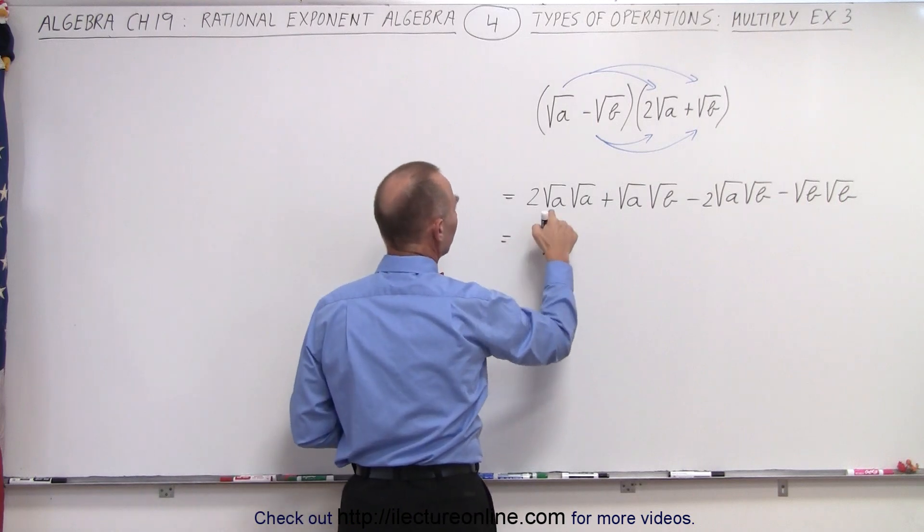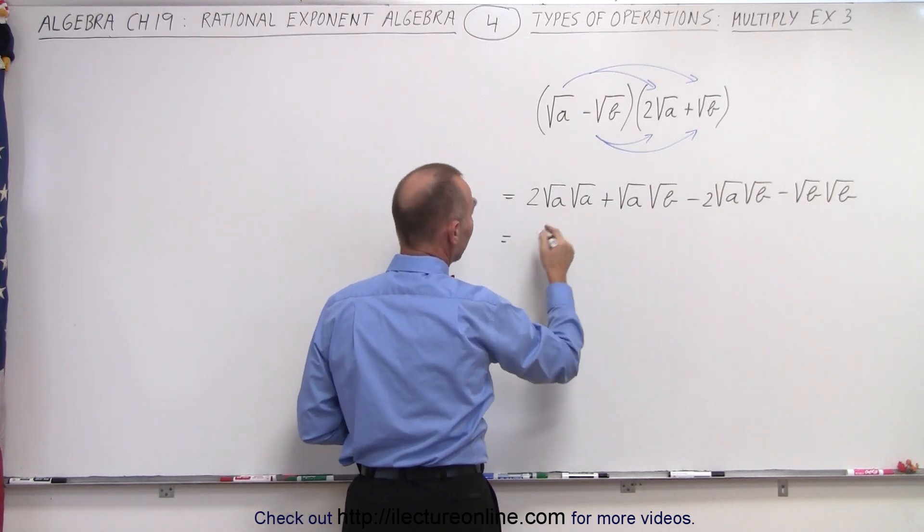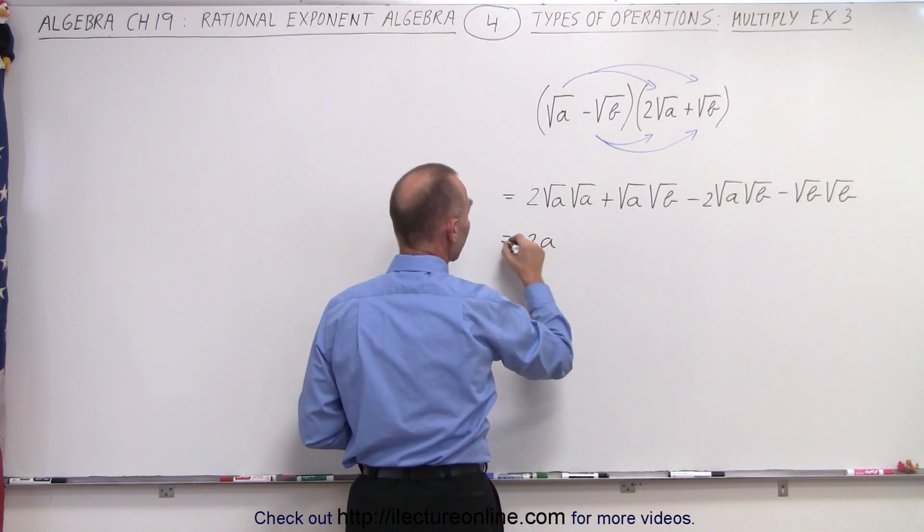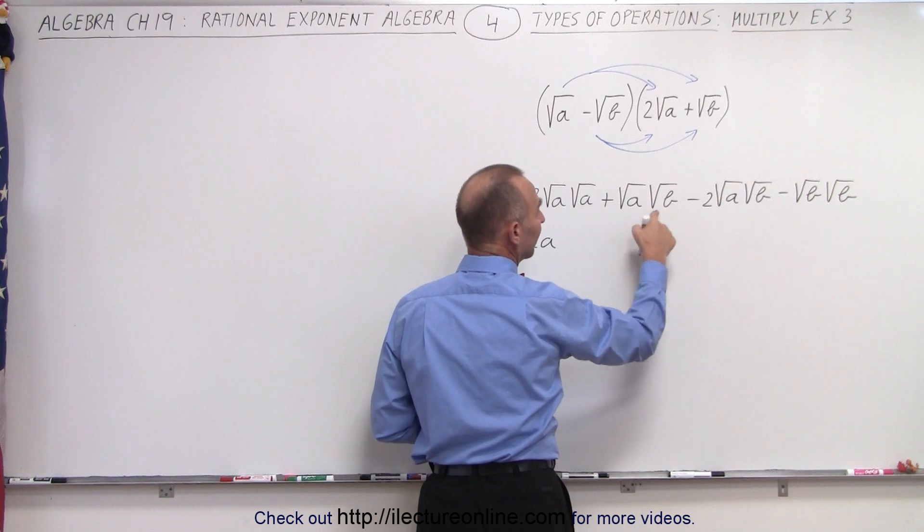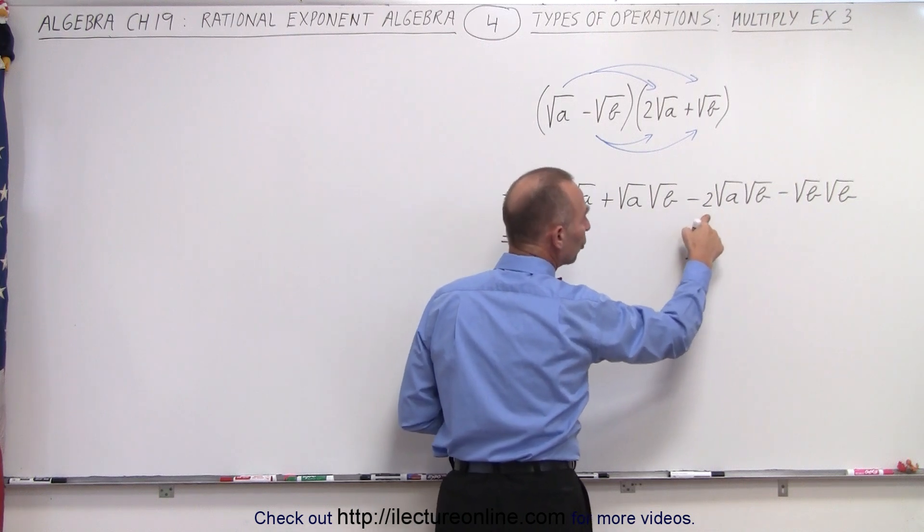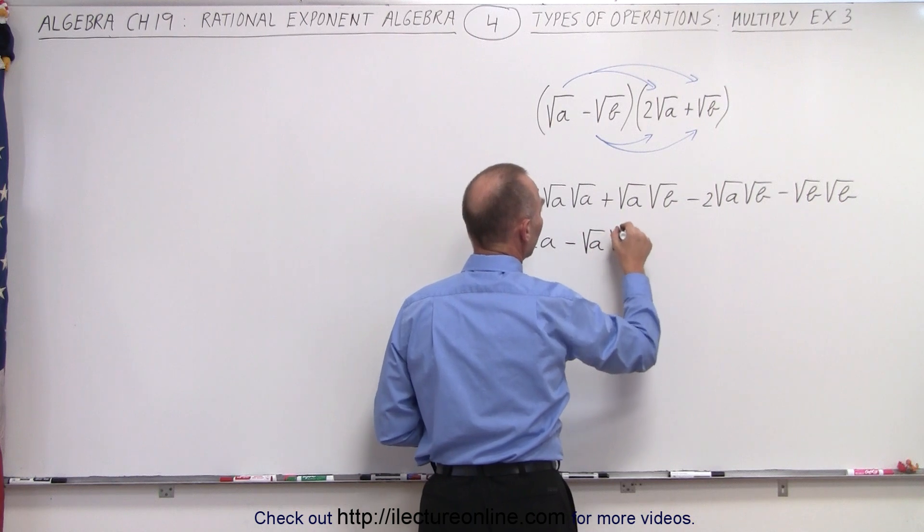This is equal to the square root of a times the square root of a, which simply becomes a. So this becomes two times a. And here we have plus the square root of a times the square root of b minus two of them. So that becomes minus the square root of a times the square root of b.